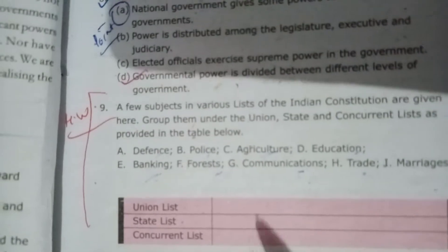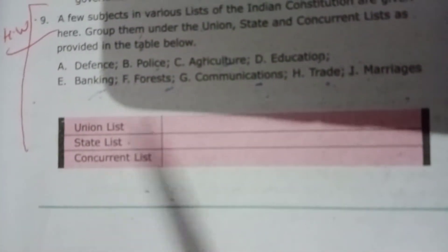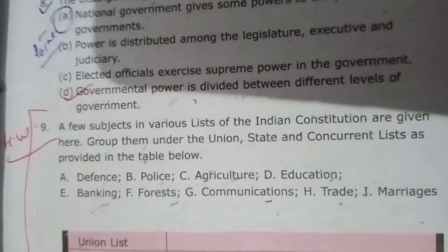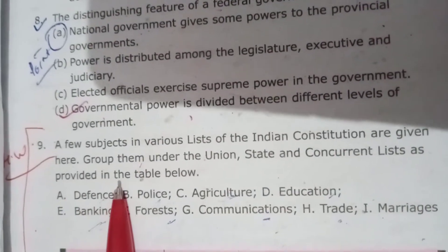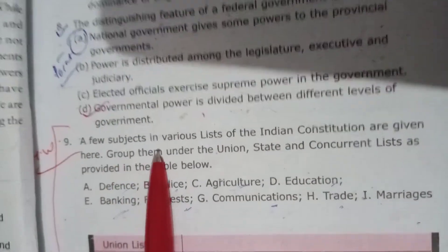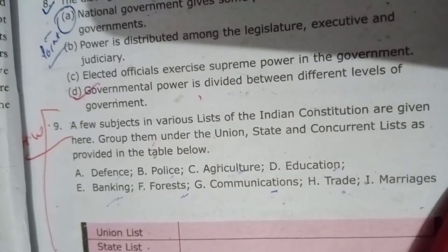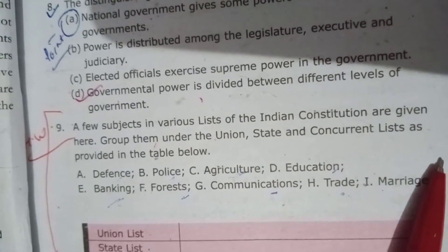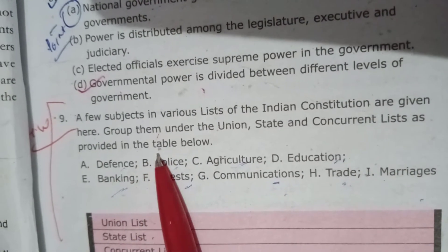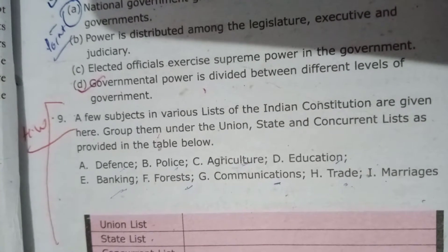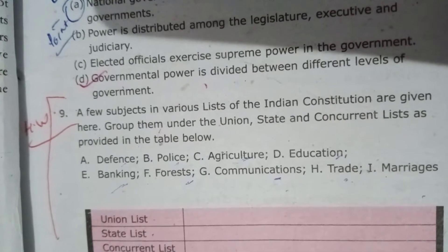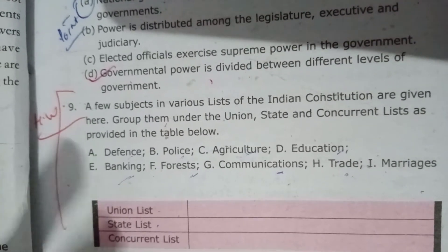Question number 9: up to question number 8 we have done as homework and discussed it. Question number 9 is from the same chapter — a few subjects from various lists of the Indian Constitution are given, and you have to group them under the Union List, State List, and Concurrent List as provided in the table. In this video I am especially explaining the format of the NCERT question and how you have to answer it.